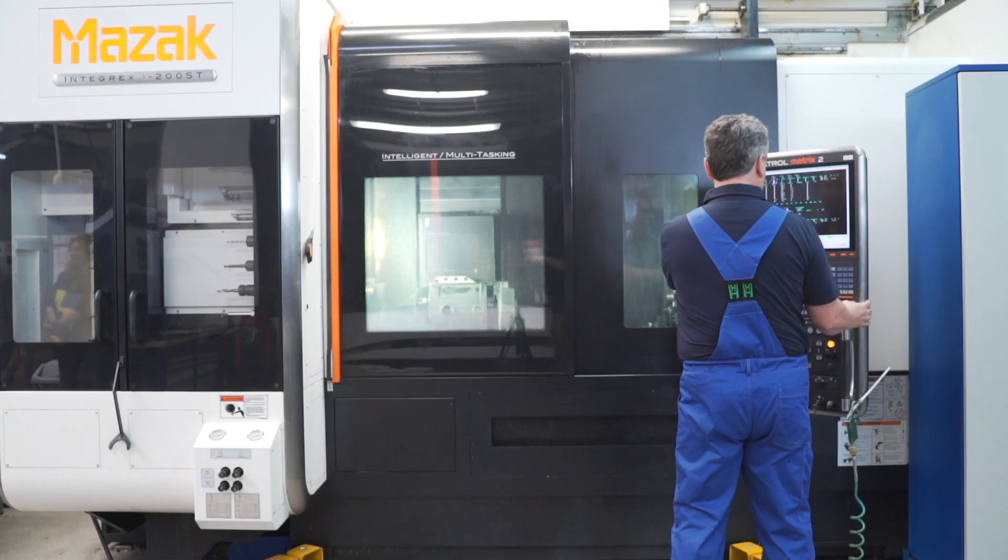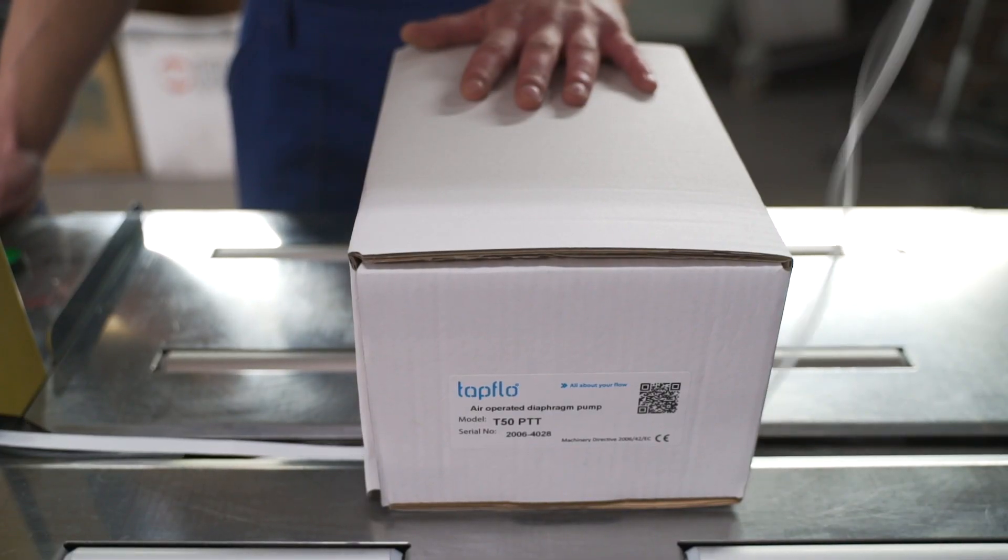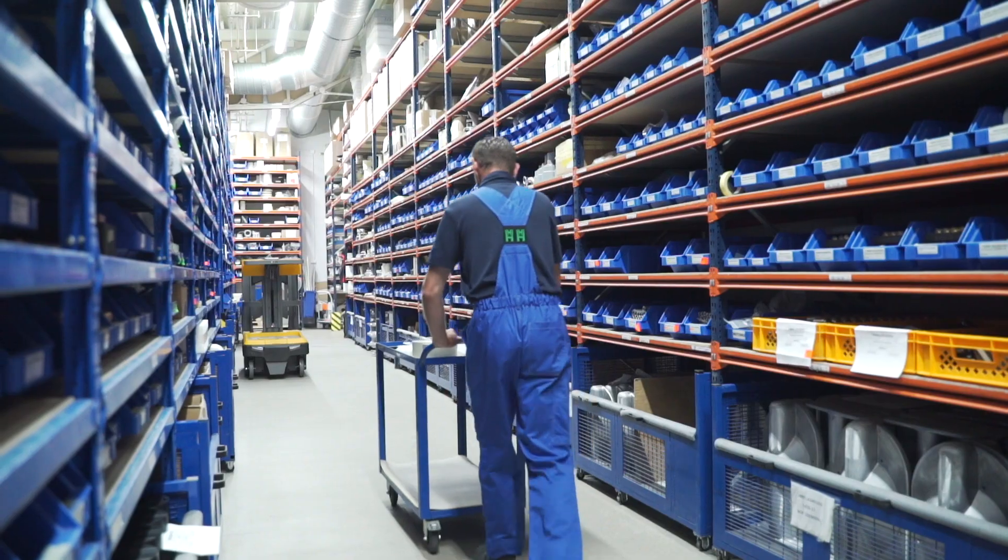The company Tapfla was established in 1980 in Kungalv, near Göteborg, Sweden. Currently, the production and distribution center of the Tapfla Group is located in Poland. We have our own distribution companies in 30 countries all over the world.